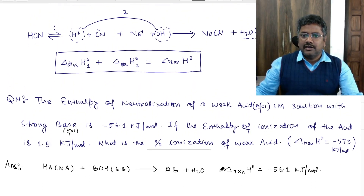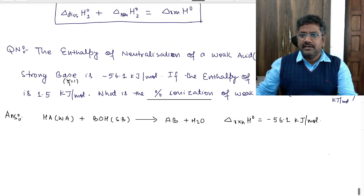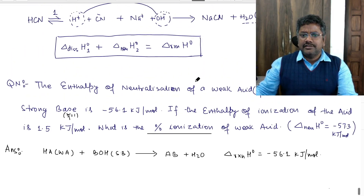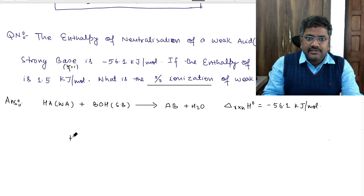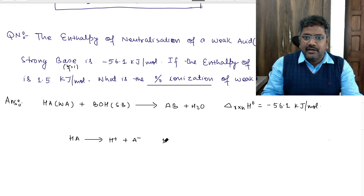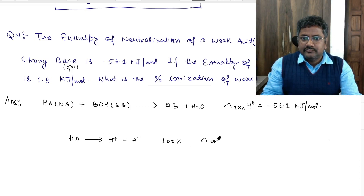Let's summarize the information. The value minus 57.3 is for strong acid and strong base. The enthalpy of ionization of the acid — meaning the enthalpy for HA giving H⁺ plus A⁻ — by assuming 100% ionization (irreversible), this ionization enthalpy is given as 1.5 kilojoules per mole.